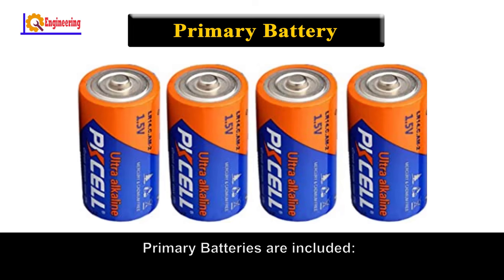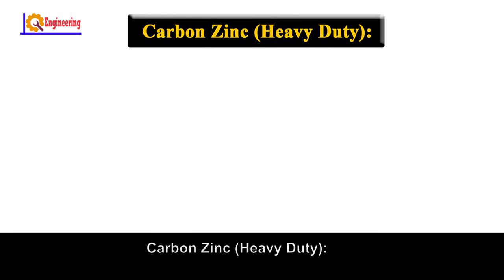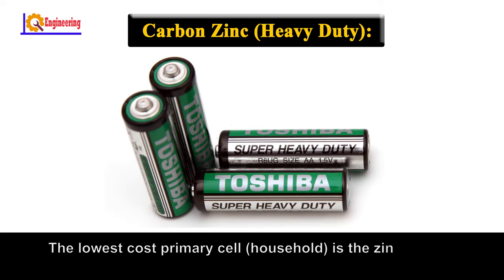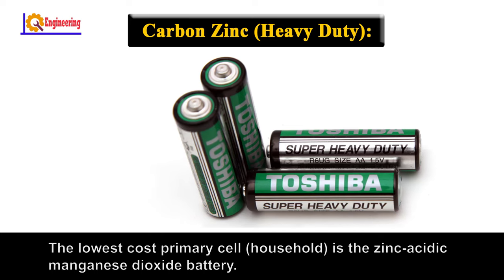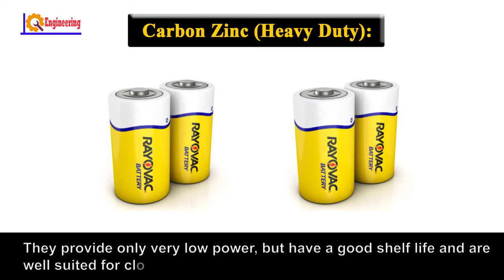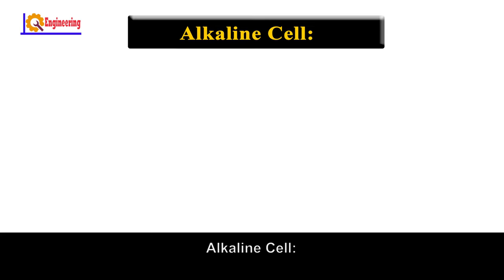Primary batteries include: Carbon Zinc (heavy duty) — the lowest cost primary cell. The zinc oxide manganese dioxide battery provides only very low power but has a good shelf life and is well suited for clocks and remote controls.